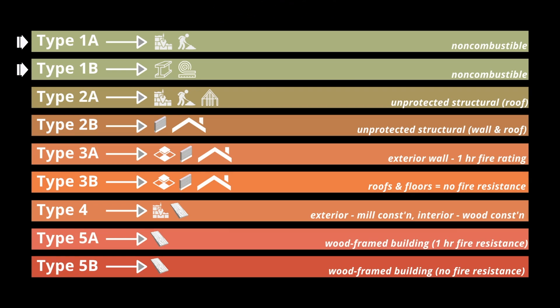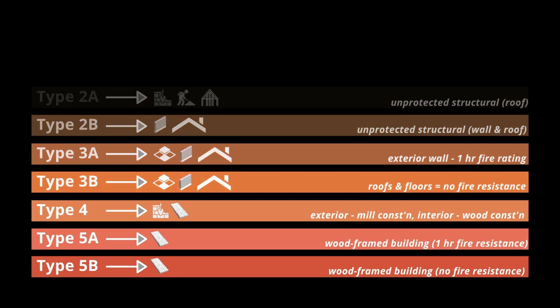As you recall, Types 1A and 1B are considered non-combustible, and I colored them green. From Type 2A onwards, I put the orange shade to present these types' vulnerability to fire. The only exception for this one is Type 4, which breaks the smooth transition from green to red, since this type can hold up well on fire compared to Types 5A and 5B.